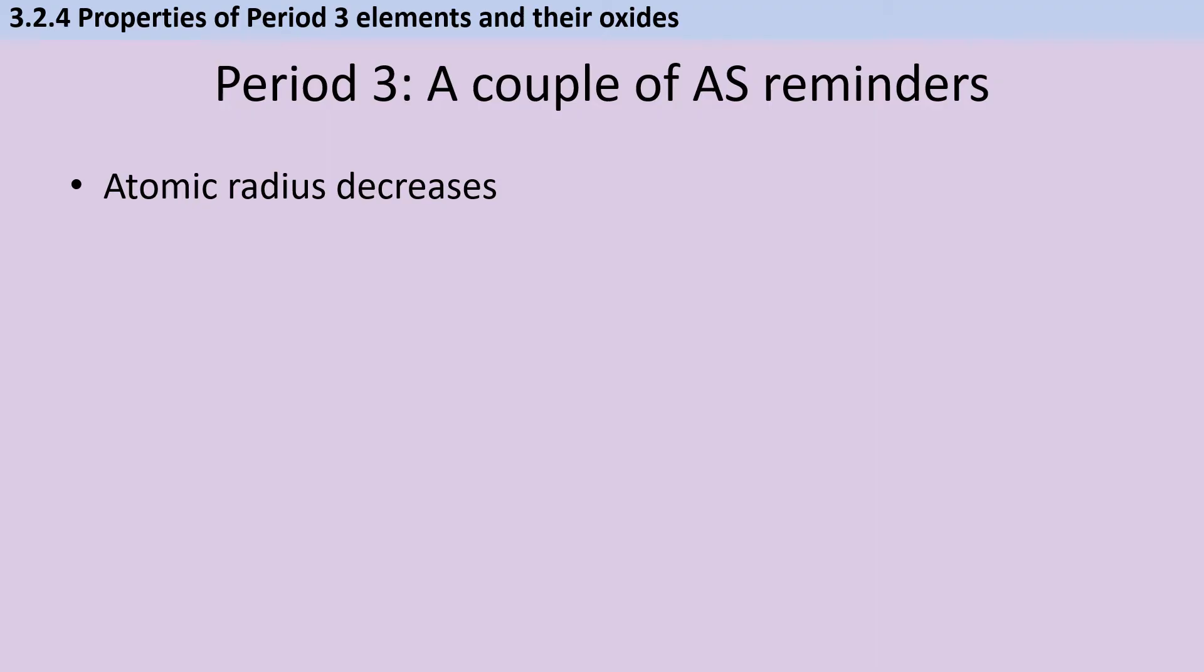The first ionization energy increases as we move left to right across the period due to the increase in strength of the electrostatic force between the nucleus, where we're adding an additional proton each time, and the outer shell electron, with the exceptions of aluminium, which has its highest energy electron in the 3p subshell rather than the 3s subshell where it was for magnesium, and sulphur, where for the first time we have two electrons sharing a 3p orbital and therefore repelling one another more strongly than the unpaired electrons.